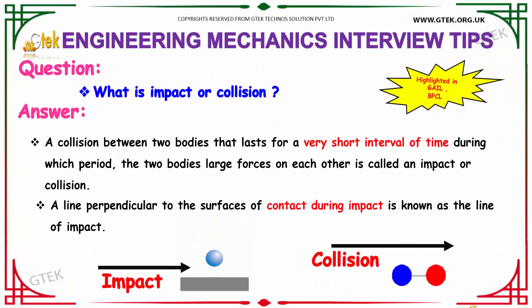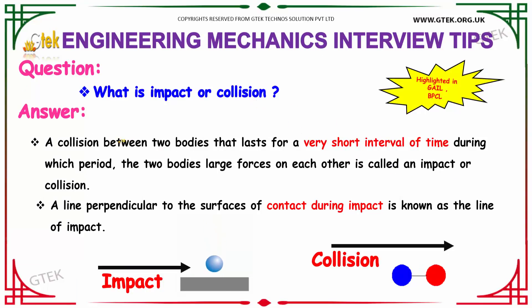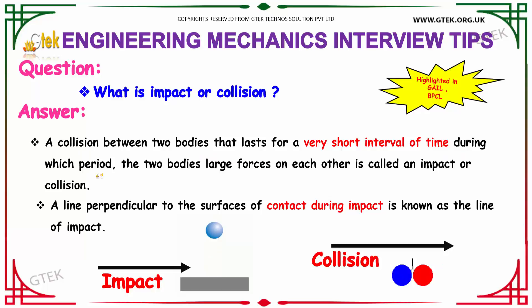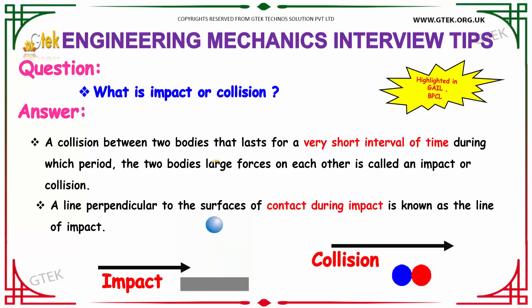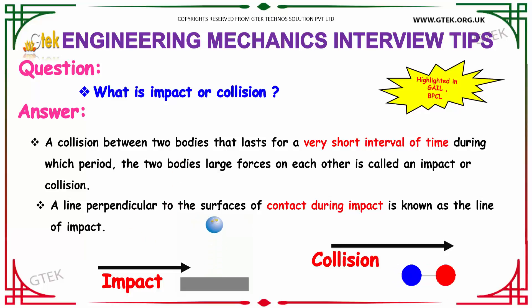What is meant by impact or collision? A collision between two bodies that lasts for a very short interval of time, during which the two bodies exert large forces on each other, is called an impact or collision. A line perpendicular to the surfaces of contact during impact is known as the line of impact.